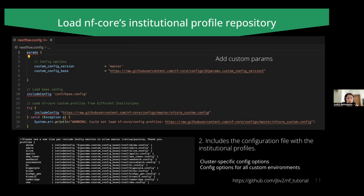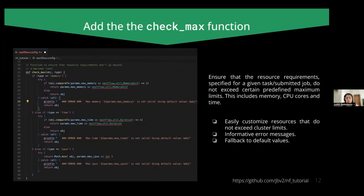And even better, if your institutional profile is not there or maybe you misspell it, you will get an informative error telling you it is not there. Finally, you need to add the checkmax function to the nextflow.config. All these lines of code ensure that the resources you ask for in tasks do not exceed the maximum limits defined in the institutional profile. This is especially good for new users who may not remember those limits, as it can prevent crashes. And if you exceed these limits, you will again get an informative message about which type of resource you're exceeding — it can be memory, CPUs, or time — and it will still run using the default values.